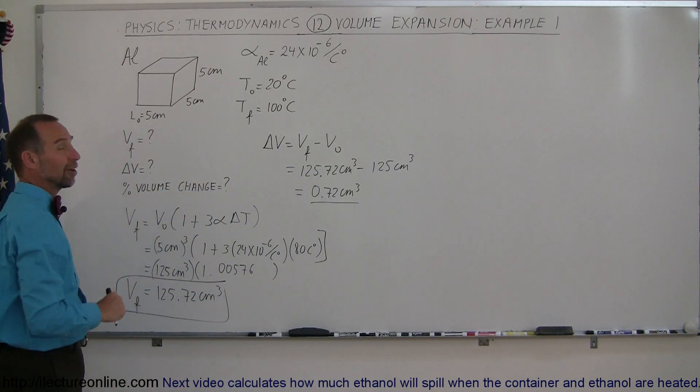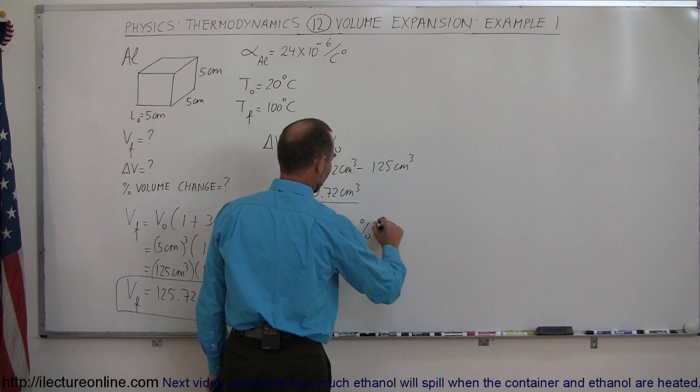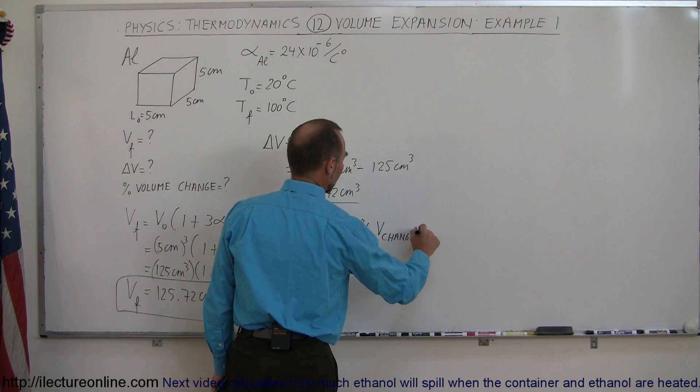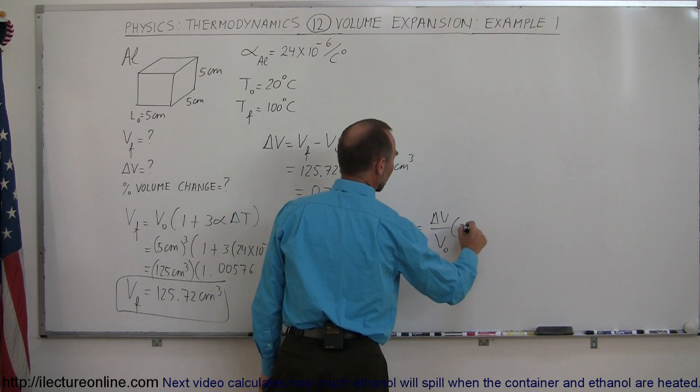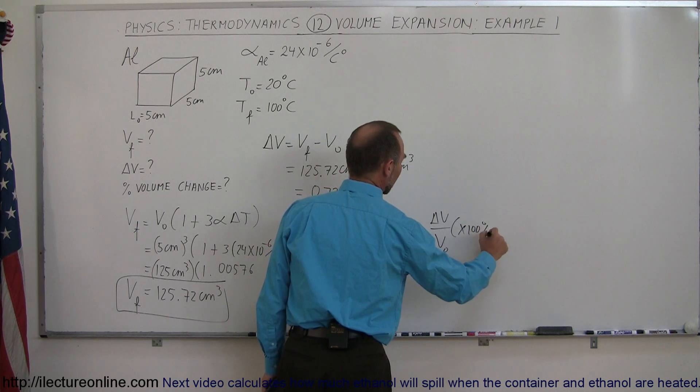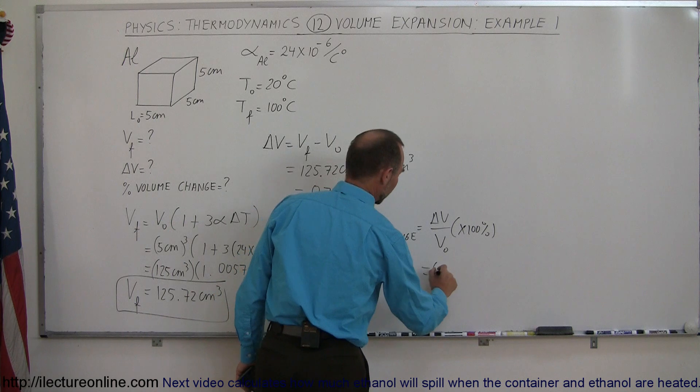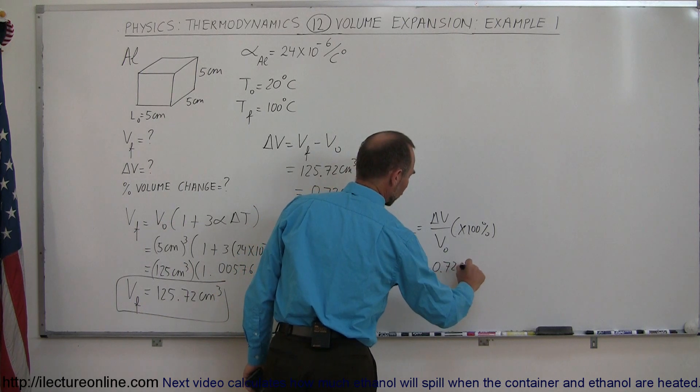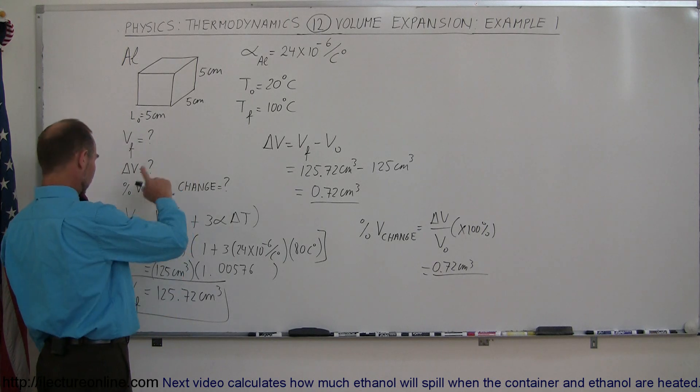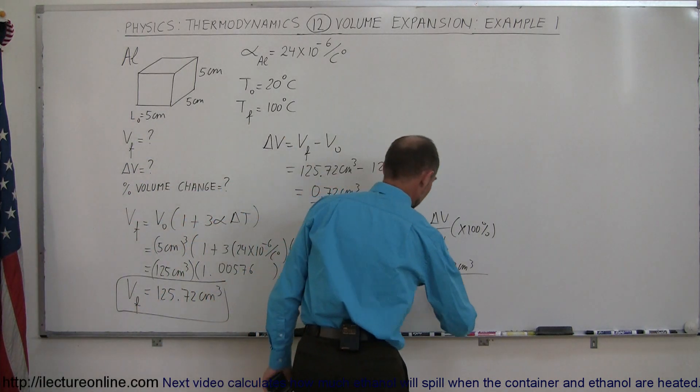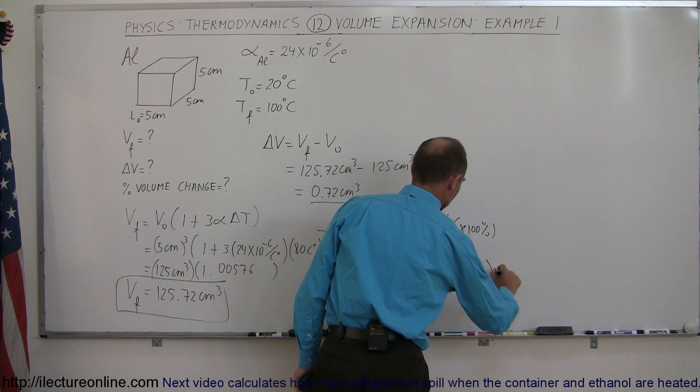And now let's see here. Let's find out what the percent volume change is. So to find the percent volume change, the percent volume change is equal to the change in the volume divided by the original volume times 100%. Okay, so we have the change in the volume right here, which is 0.72 centimeters cubed, divided by the original volume, which was right here at 125 centimeters cubed.